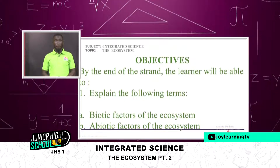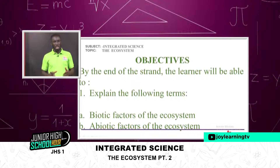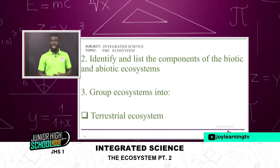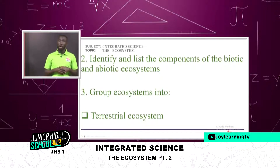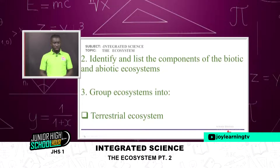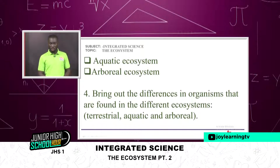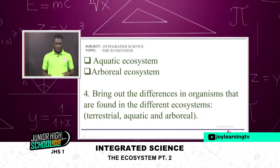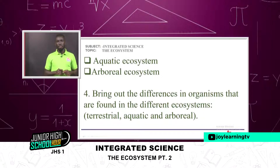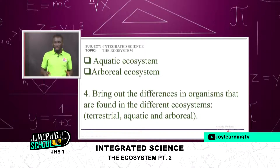One: explain the biotic factors of the ecosystem and the abiotic factors of the ecosystem. Two: identify and list the components of the biotic and abiotic systems of an ecosystem. Three: group ecosystems into terrestrial ecosystem, aquatic ecosystem, and arboreal ecosystem. Four: bring out differences that exist between organisms found in different ecosystems — for example terrestrial, aquatic, arboreal — what makes them adaptable to live there.